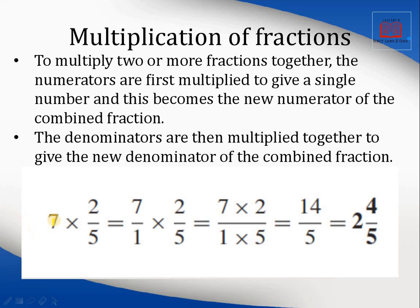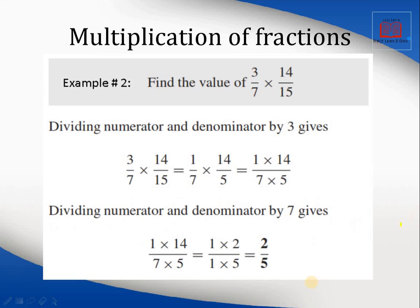Let's take another example: 7 multiplied by 2/5. If there is no denominator shown, it is understood to be 1, so this becomes 7/1 × 2/5. Numerators: 7 × 2 = 14; denominators: 1 × 5 = 5, giving 14/5. If you want to convert this improper fraction to a mixed number, that process has already been covered previously.